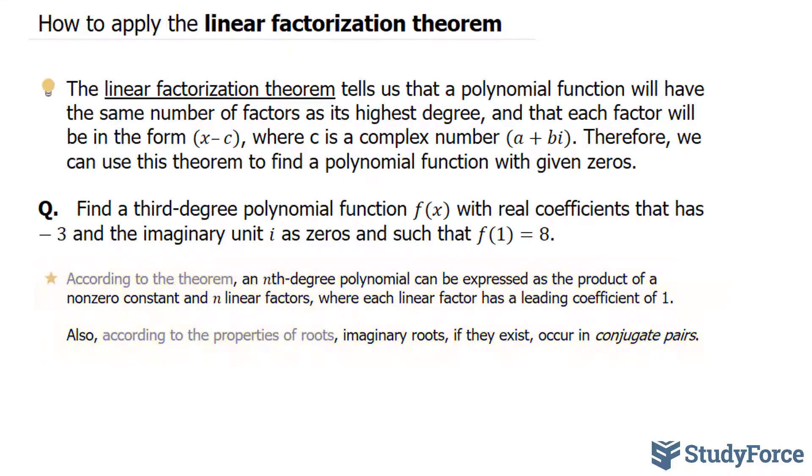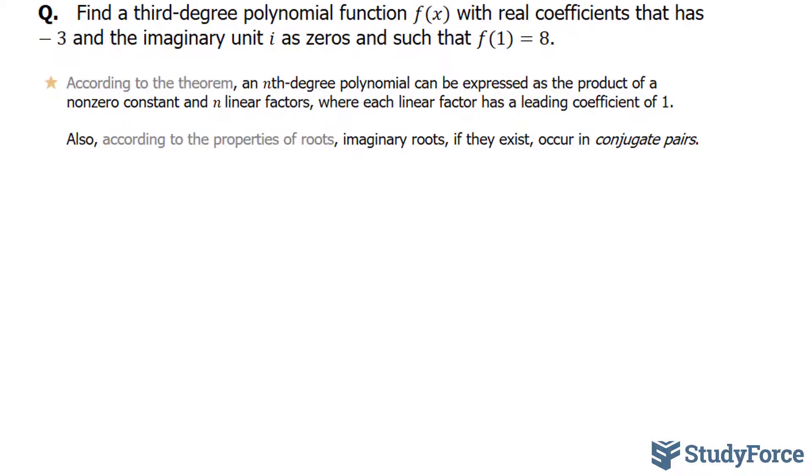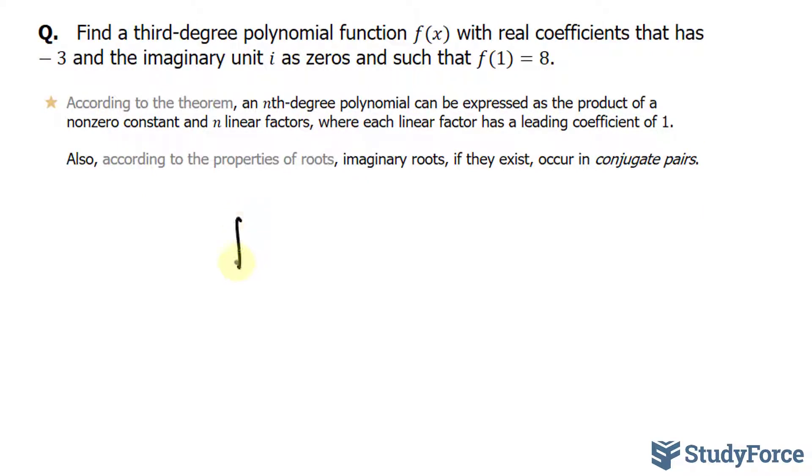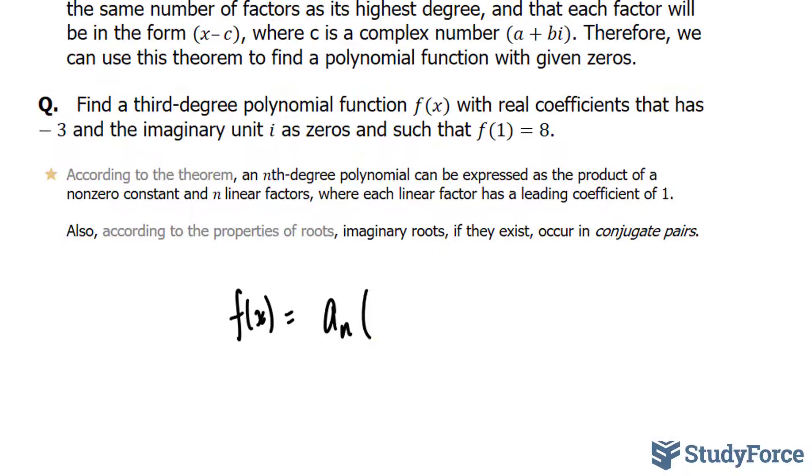They tell us in the question that there is an imaginary unit i as one of the roots. Therefore, we'll start off by writing out f(x) equals our leading coefficient, which I'll represent as a_n, and our first factor. They tell us that it has a root at -3, so we write down (x + 3)(x + i), and given that imaginary roots occur in conjugate pairs, we'll also have (x - i).